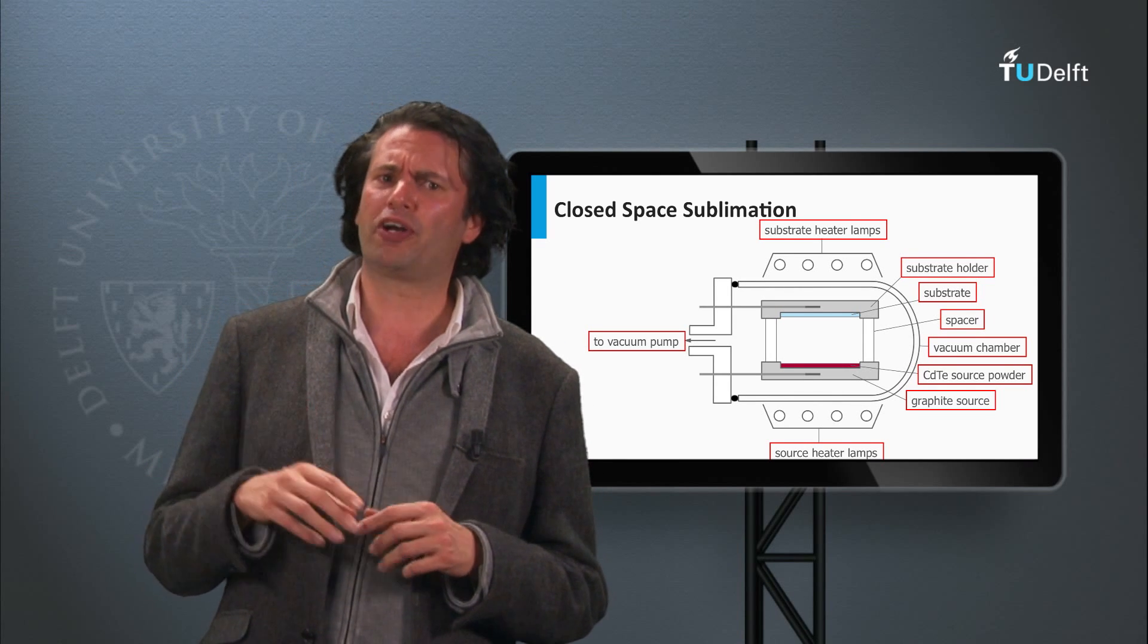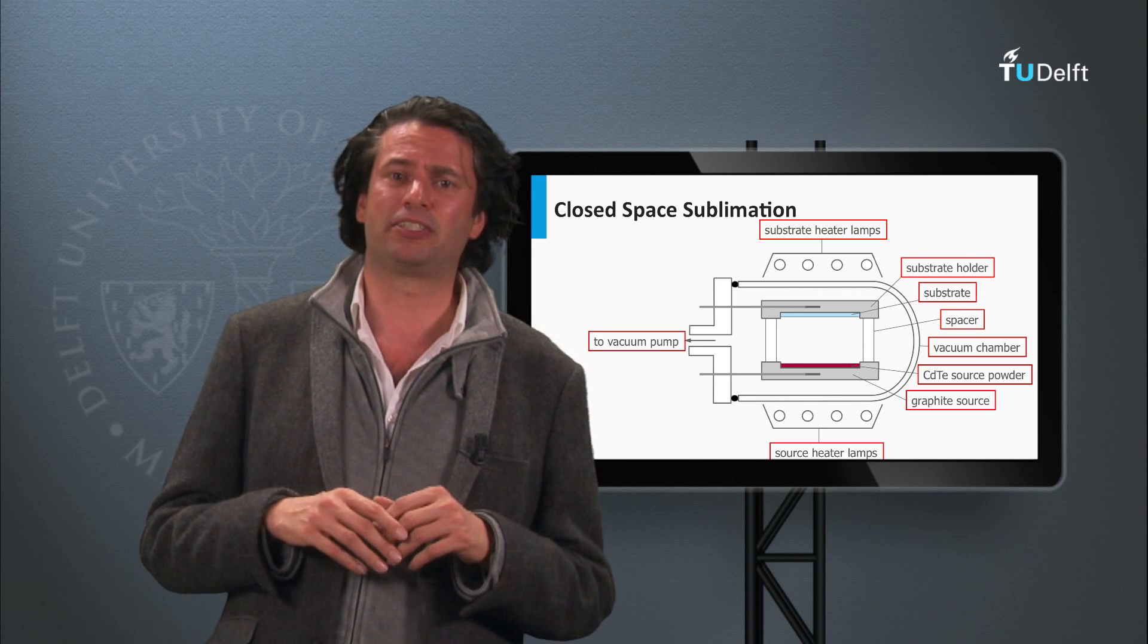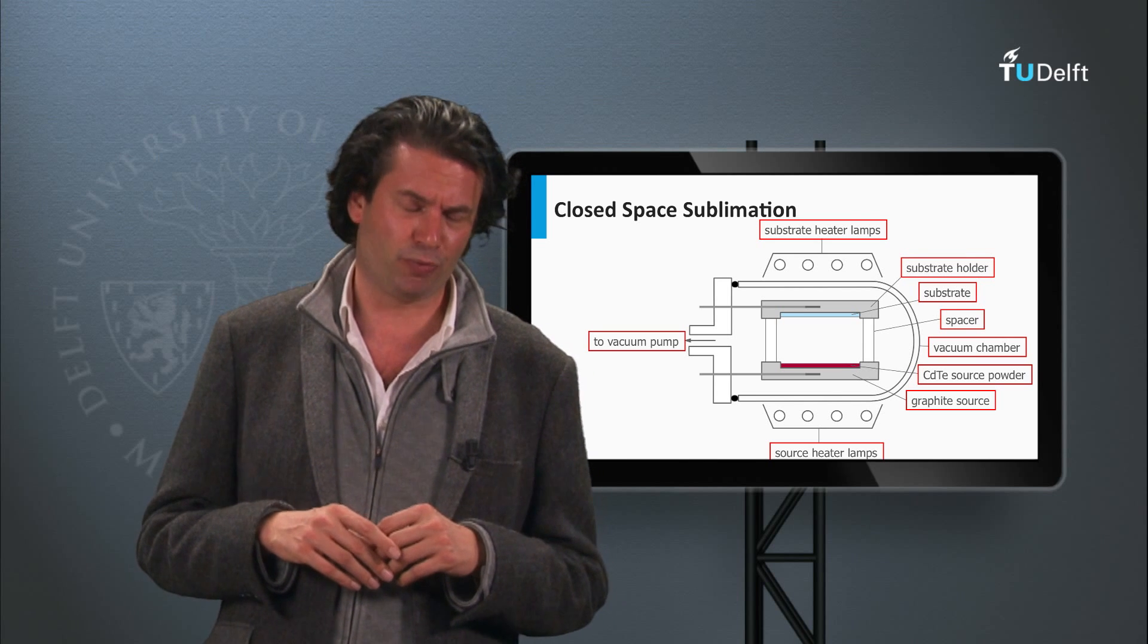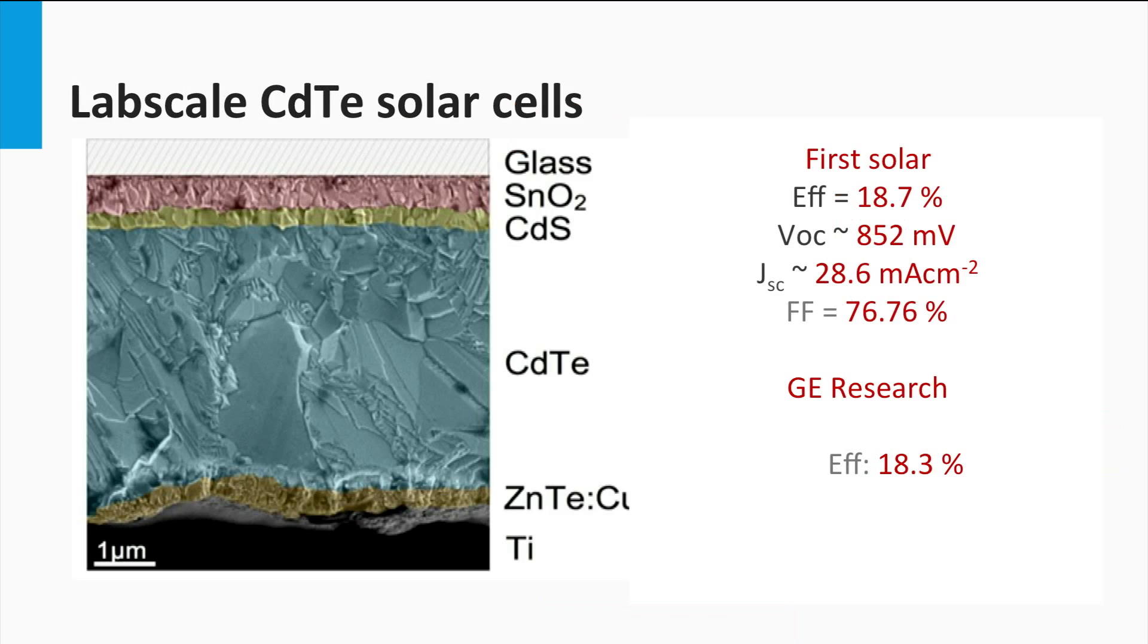However, First Solar is by far the largest cadmium telluride manufacturer in the world nowadays. From 2008, First Solar has an annual production rate of 500 megawatts and more, and was in 2006 and 2007 one of the biggest solar module manufacturers in the world.